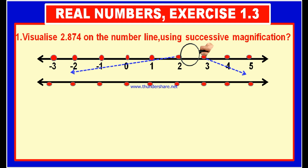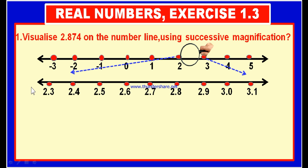On this magnified number line, the part of 2 and 3 is magnified. We took points at equal intervals and gave values: 2.0, 2.1, 2.2, 2.3, 2.4, 2.5, 2.6, 2.7, 2.8, 2.9, 3.0 and so on. This part is magnified and we got again the same number line, and now the part of this number line is further magnified.